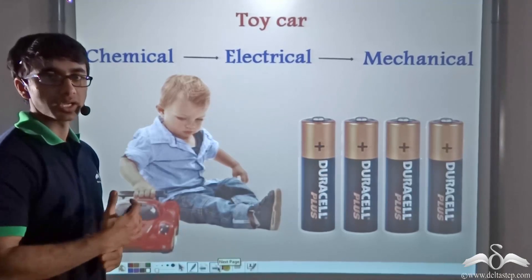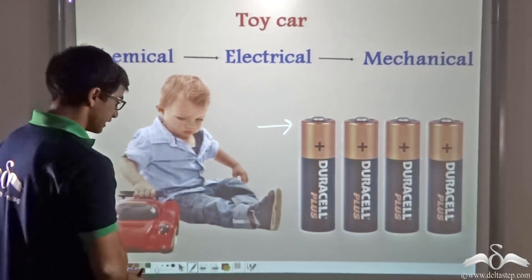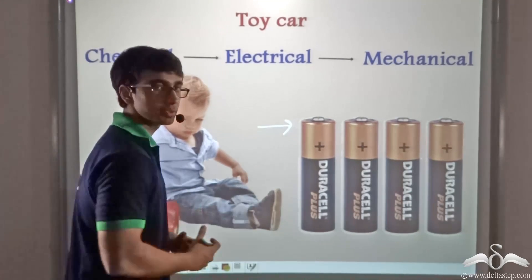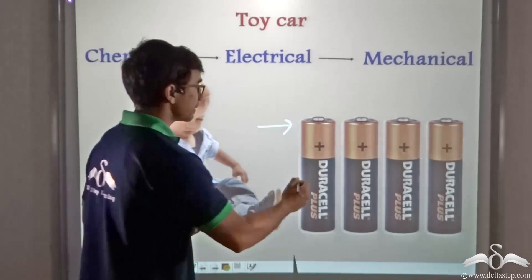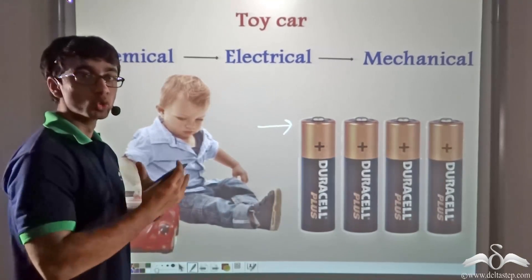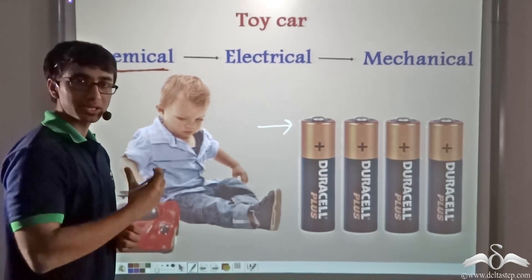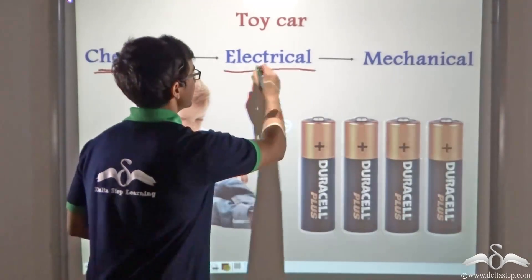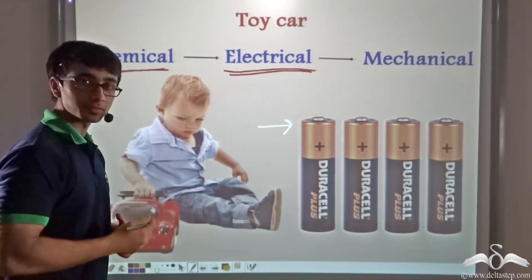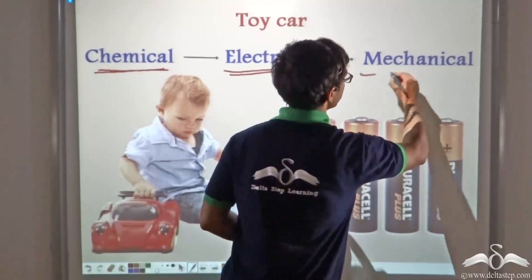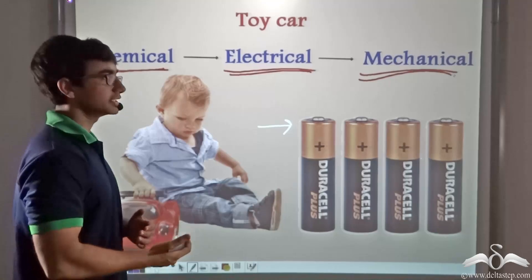A toy car contains cells or batteries inside it. Inside a battery there is a chemical called the electrolyte, which supplies electricity to make the car move. So the battery has chemical energy due to the electrolyte, which is converted into electrical energy. With the help of this electrical energy the car moves, and since the car is in motion it possesses mechanical energy. Thus chemical energy is converted to electrical energy, which in turn is converted to mechanical energy.